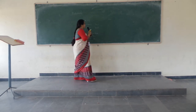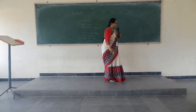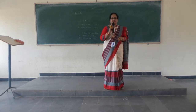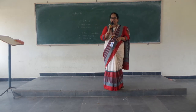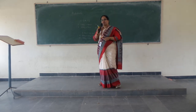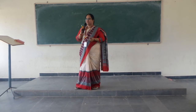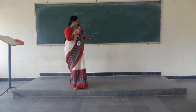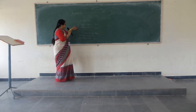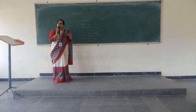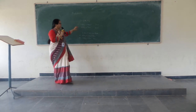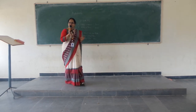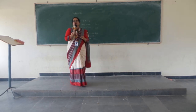Now we will define the main definition of probability. Probability was first defined as the classical definition by scientists Pascal and Fermat. To define probability, they took two assumptions: the events should be finite, and the events should be equally likely.